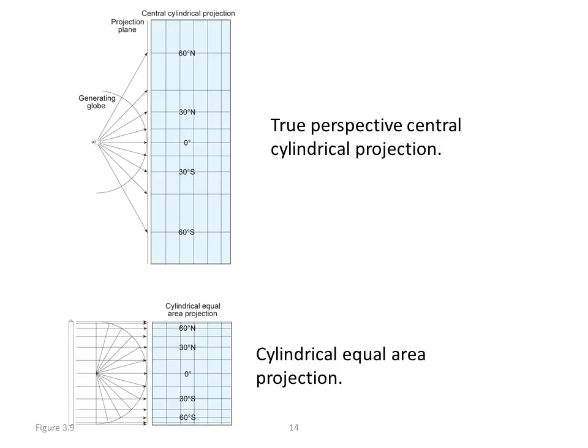So here's an example of two different types of cylindrical projections. The first one is a so-called true perspective central cylindrical projection. In other words, this just takes the projection process, and it basically says we put a cylinder around the globe. Right at the equator, we're going to have a line of tangency, and along that line, we have a scale factor of 1.